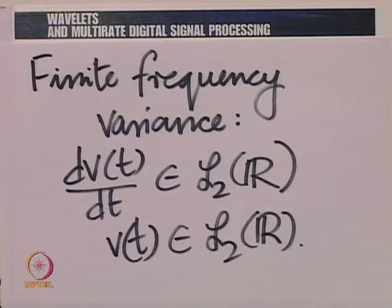If we use this definition of a window function, the most common or simplest window we have encountered so far disqualifies — namely the rectangular window, the rectangular pulse used as the scaling function in the Haar multiresolution analysis. However, we shall take it as an extreme case where one of these conditions is not satisfied but the other is. In the Haar multiresolution analysis, the scaling function or wavelet function has an infinite frequency variance, so it disqualifies from the point of view of frequency variance, but it definitely qualifies from the point of view of time variance.